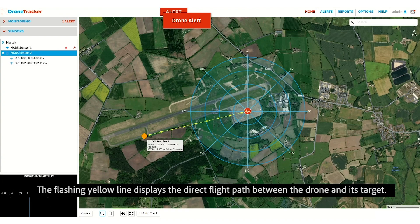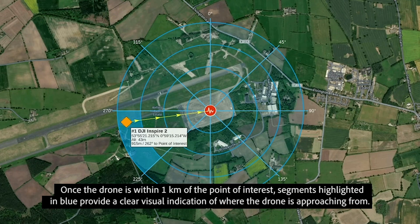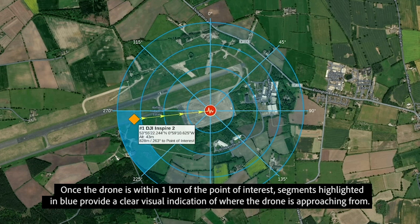The flashing yellow line displays the direct flight path between the drone and its target. Once the drone is within 1km of the point of interest, segments highlighted in blue provide a clear visual indication of where the drone is approaching from.